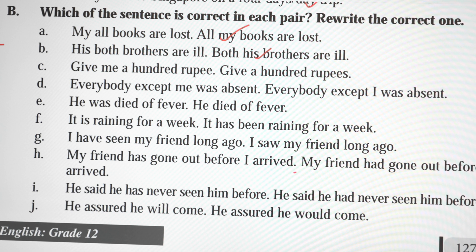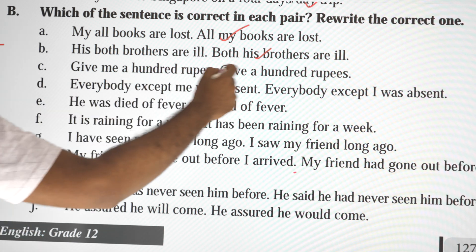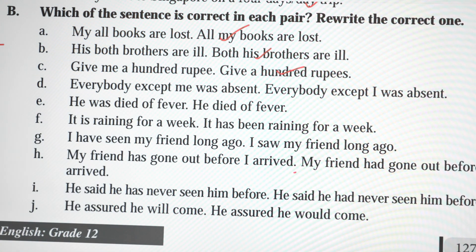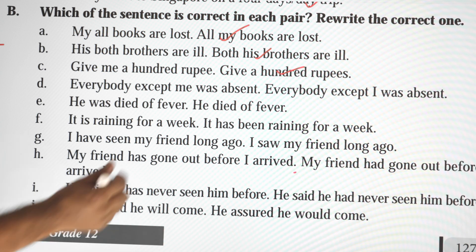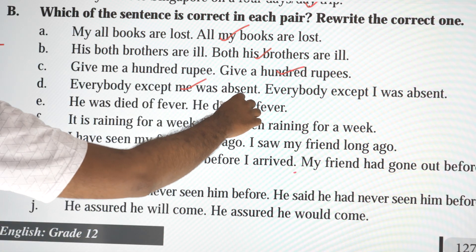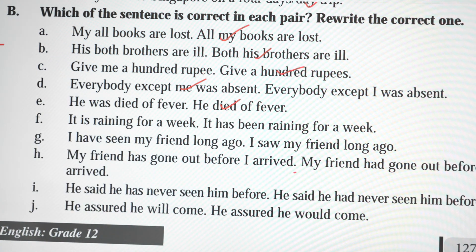Give me 100 rupees. Everybody except me was absent. He died of fever — not passive. It is raining for a week, or it has been raining for a week? It has been raining for a week.